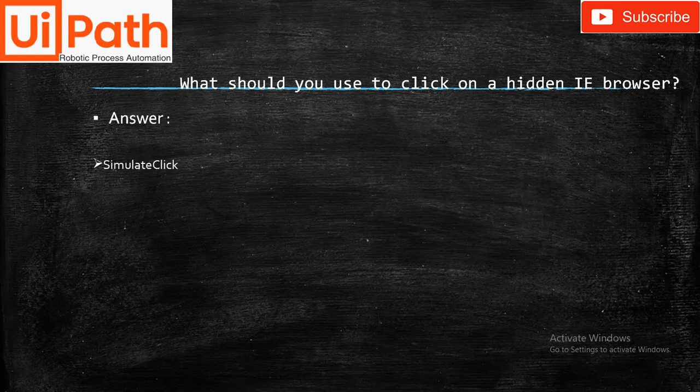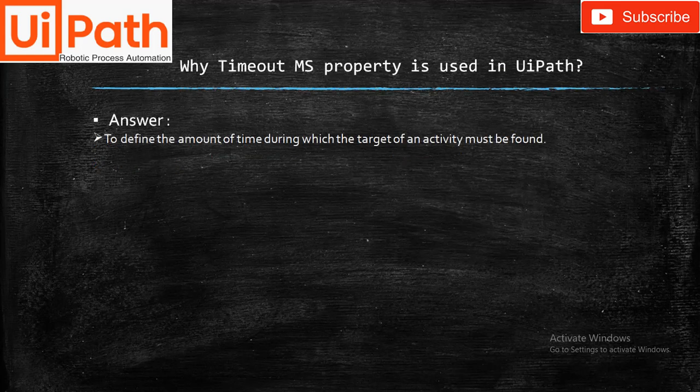What should you use to click on a hidden IE browser? The answer is Simulate Click. The WaitTimeout in milliseconds property in UiPath defines the amount of time during which the target of an activity must be found. This is set at the properties panel.